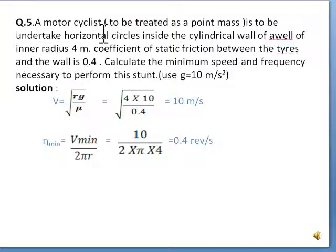Question number five. A motorcyclist to be treated as a point mass is to undertake horizontal circles inside the cylindrical wall of a well of inner radius 4 m. Coefficient of static friction between the tyres and the wall is 0.4. Calculate the minimum speed and frequency necessary to perform this stunt. Use g = 10 m/s².